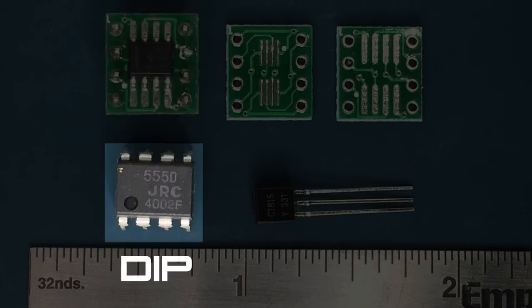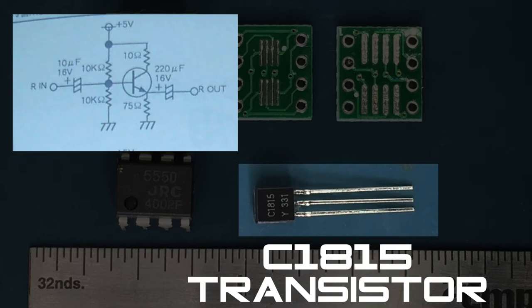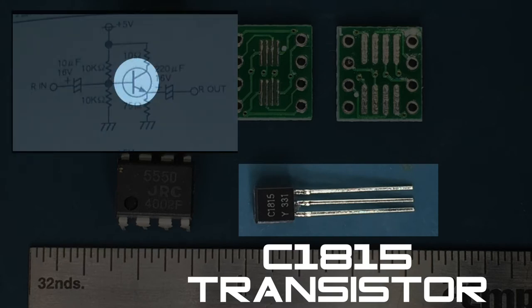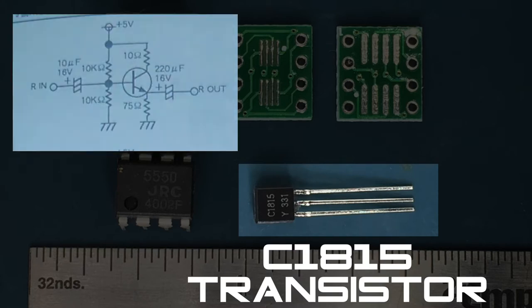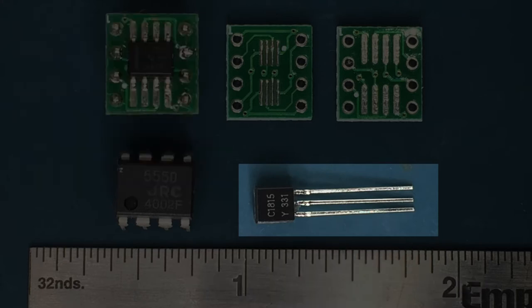A DIP adapter is needed because most breadboard and prototype boards have holes spaced for DIP IC packages. The bottom left is a DIP-sized 555 timer IC, and you can see it's bigger than a TSSOP or SOIC package. Finally, on the bottom right is a transistor that would have been used in the original schematic. Essentially, the THS 7316 contains three of these equivalent transistors along with some additional resistors.